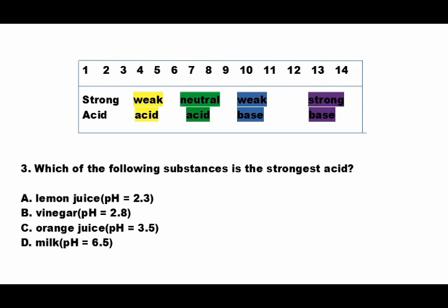The answer is letter A — lemon juice. Of all the liquids listed, lemon juice has a pH of 2.3, making it the most acidic. That places it closest to 1 on the pH scale.